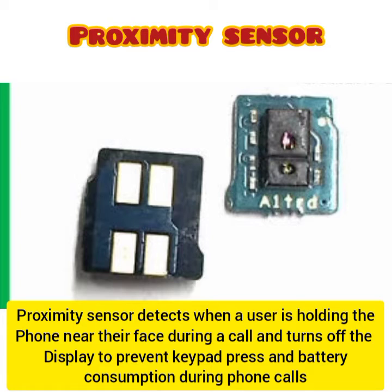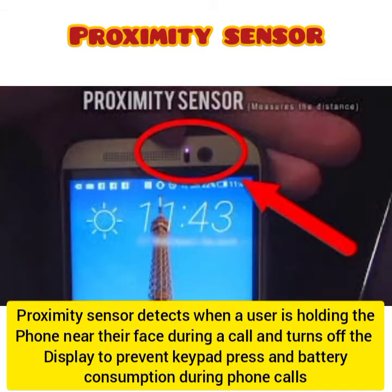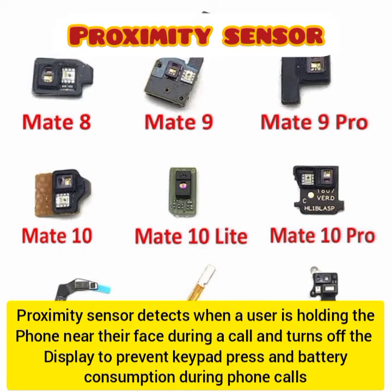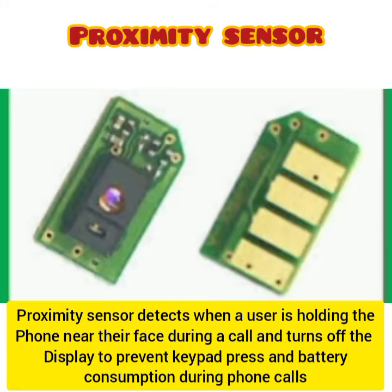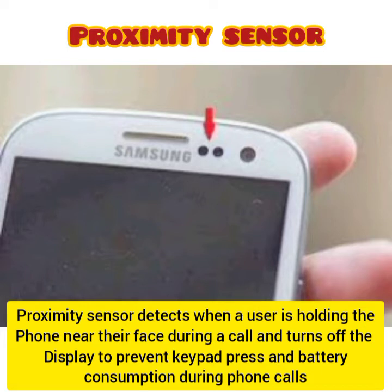The proximity sensor is located at the top side of the mobile phone, close to the camera. It detects when a user is holding the phone near their face during a call and turns off the display to prevent accidental keypad presses and battery consumption. You will notice when making a call that bringing the phone close to your skin dims the light — the proximity sensor also prevents the touch part from pressing itself when it contacts the skin.